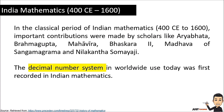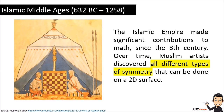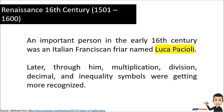Islamic Middle Ages, from 632 CE to 1258: the Islamic Empire made significant contributions to mathematics since the eighth century. Over time, Muslim artists discovered all the different types of symmetry that can be done on a 2D surface. Let's proceed to the Renaissance of the 16th century.